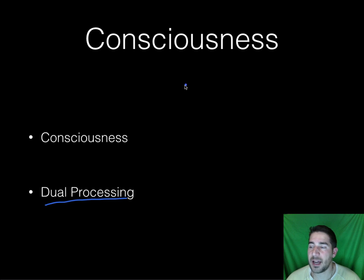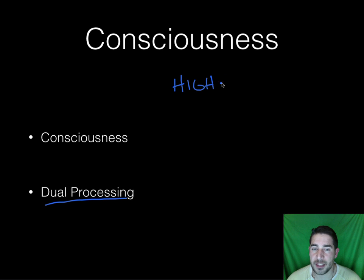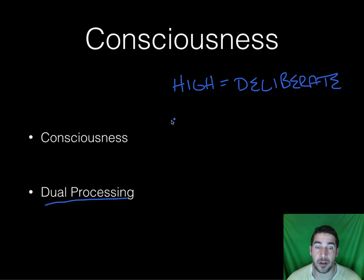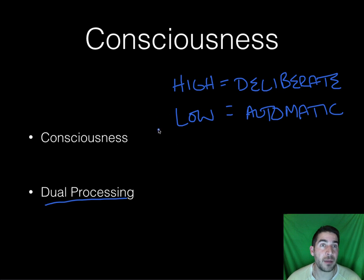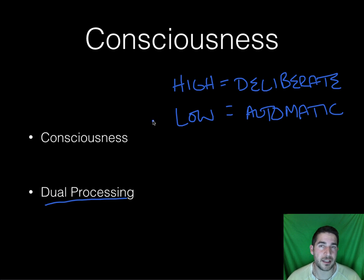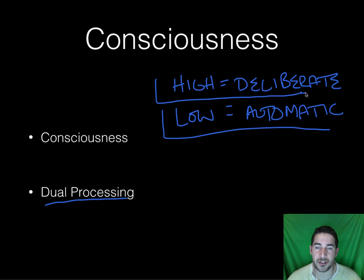We have a high road that is conscious and deliberate thought — what we are actively trying to think about. We have a low road that is automatic — things we might not be thinking about but that are just happening. For example, when you see somebody on the street, you might automatically have a prejudice against them without even having consciously thought about it. That's automatic processing going on in your brain. Deliberate processing might kick in and make you say, 'wait, there's no reason for me to feel that way.'